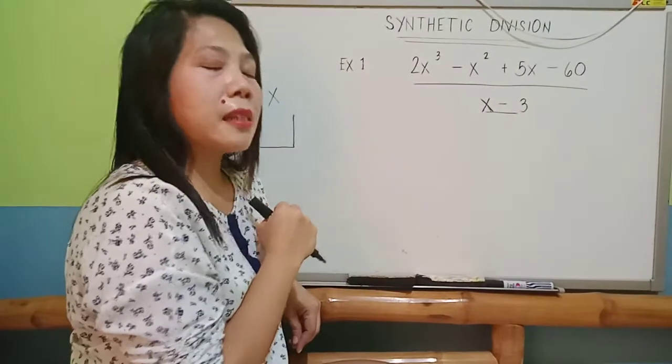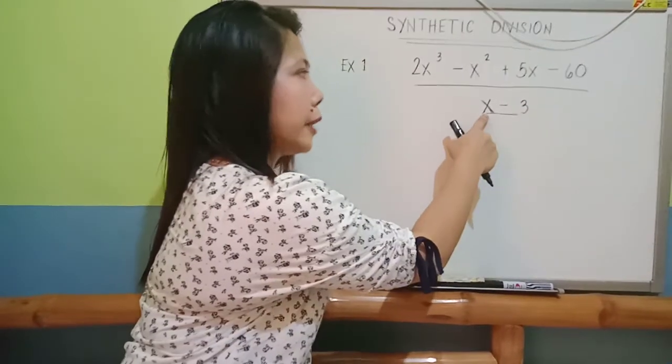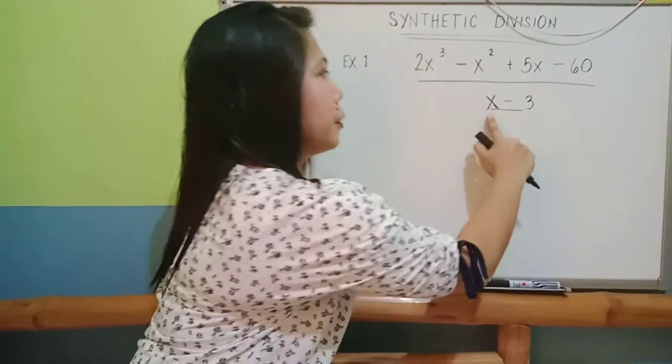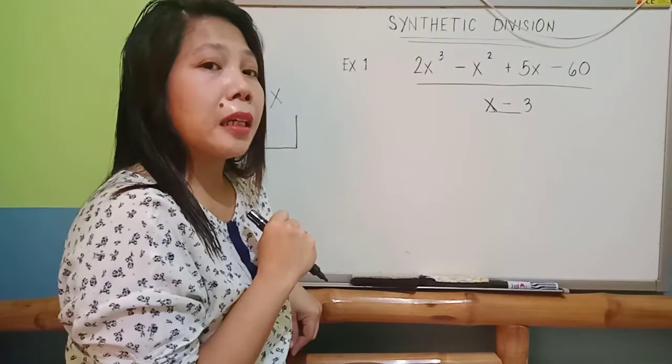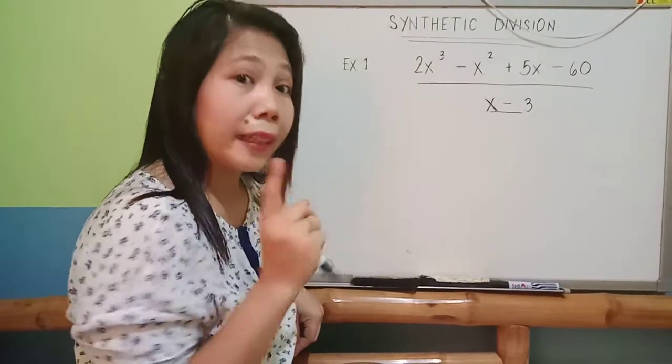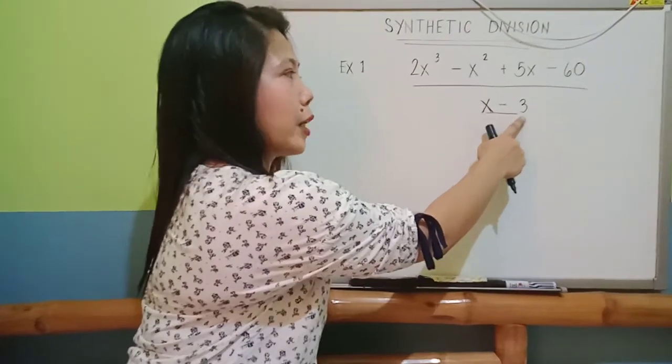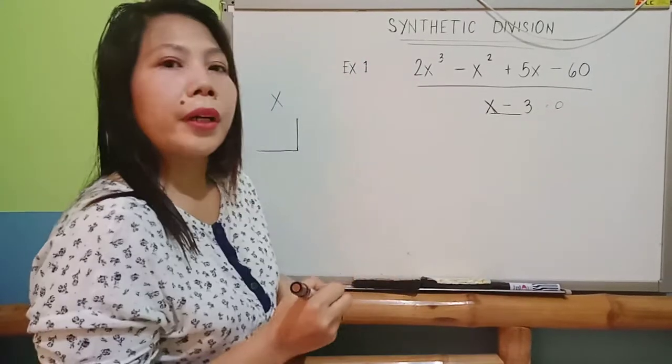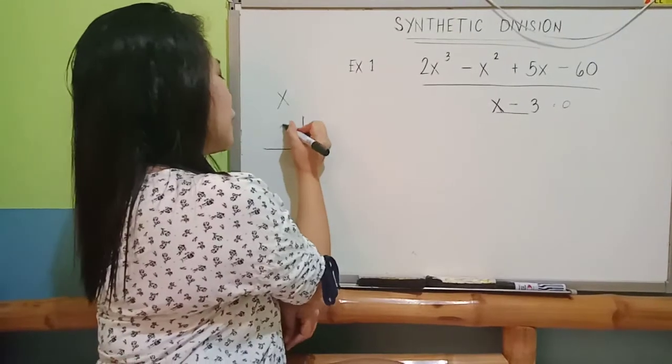Let's think of a number that should be plugged in on your x to be able for you to get a 0 on this equation. So, that number would be a positive 3, right? A positive 3 minus 3 is equal to 0. Therefore, your x here should be a positive 3.